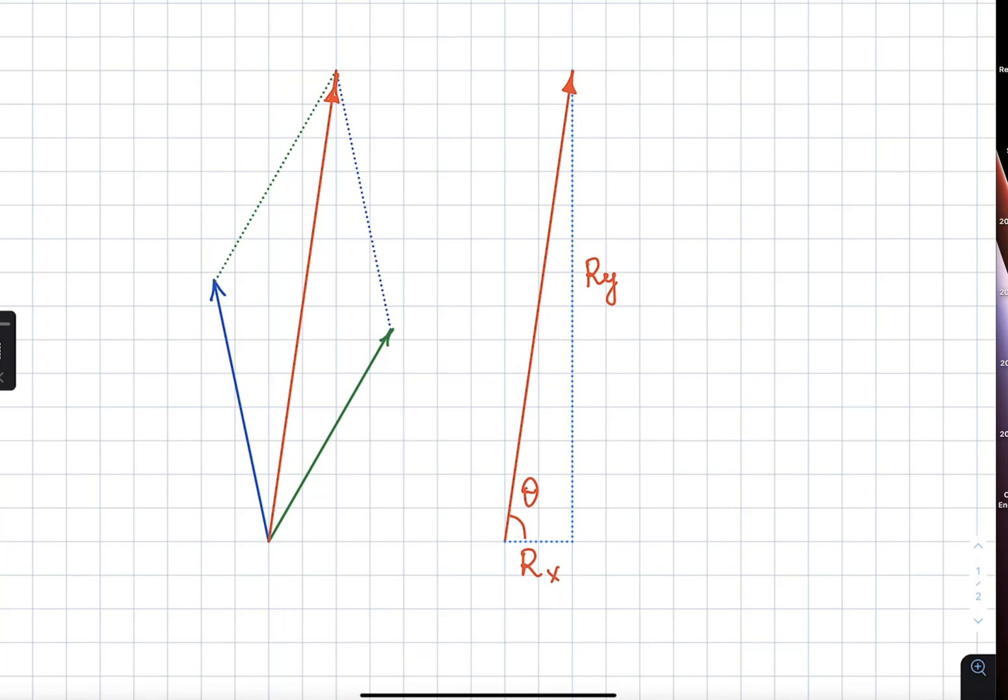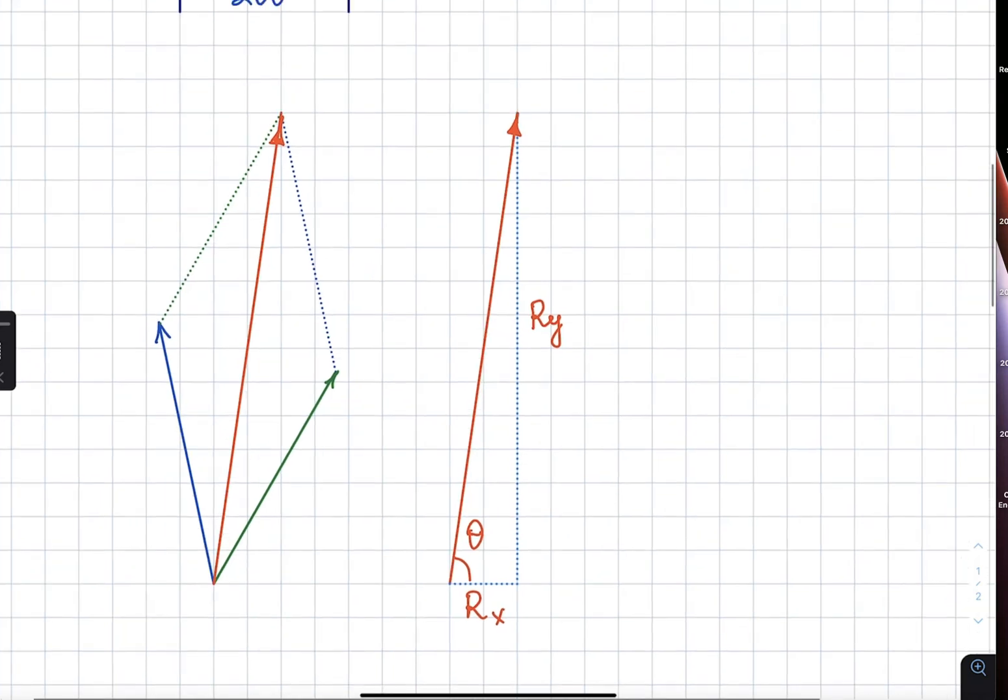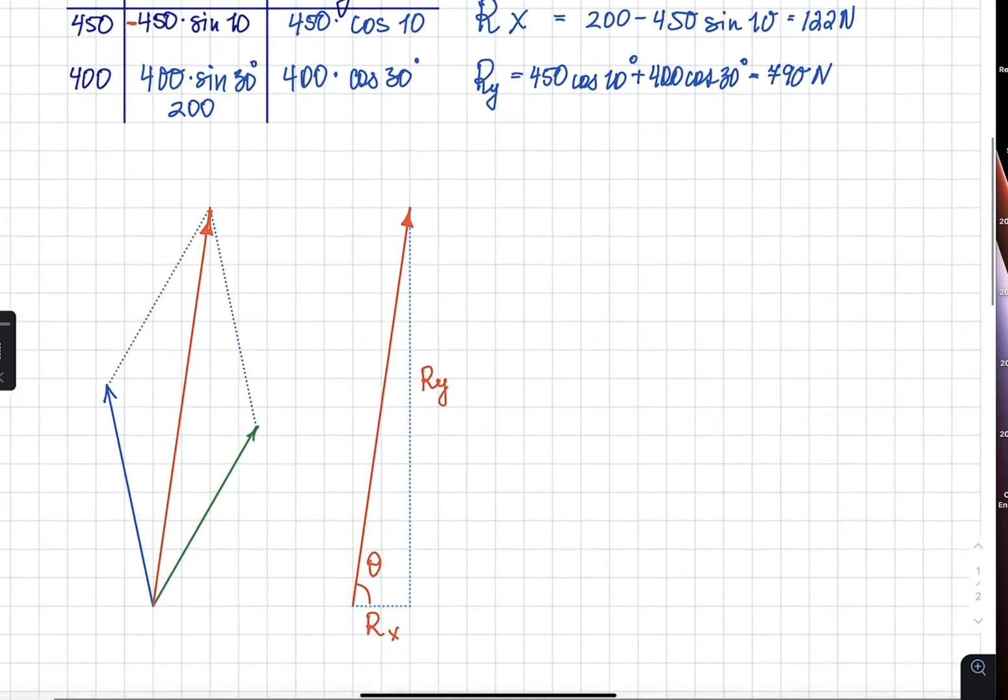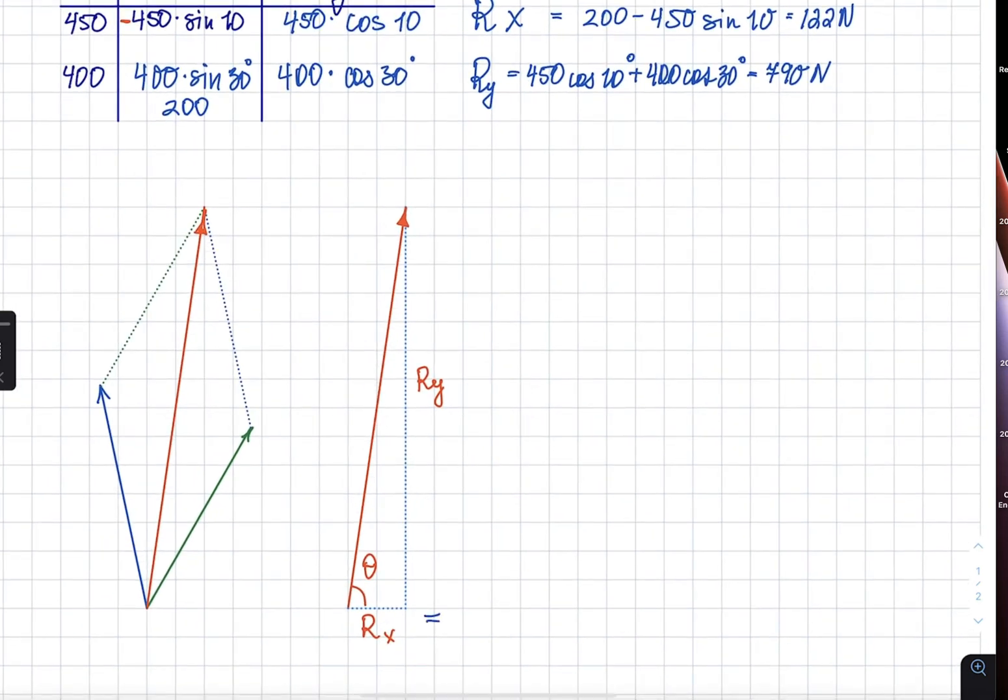On the right, you can see that I recreated that resultant vector and showed the RX and RY. Now, mathematically, RX and RY were calculated as 122 newtons and 790 newtons. So, 7 times more, and visually look at it, 1, 2, 3, 4, 5, 6, 7. Practically 7 times as much. So, that represents what it should look like visually and mathematically.